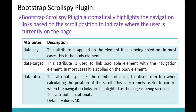First let us understand what is the Scrollspy Plugin. The Bootstrap Scrollspy Plugin automatically highlights the navigation links based on the scroll position, to indicate where the user is currently on the web page. In order to work with the Scrollspy Plugin, we need three important attributes: DataSpy, DataTarget, and DataOffset. We are going to learn the importance of all these attributes when we code for the Scrollspy Plugin in Visual Studio.